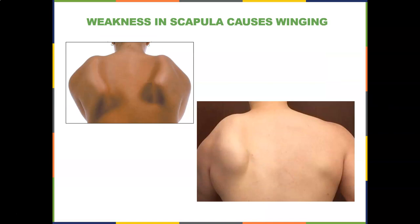Now here's an interesting point about weakness in the serratus anterior — it causes scapular winging. If you look at the top picture, she has bilateral serratus anterior weakness. On the bottom picture, he has unilateral weakness, and this was an injury from pitching — damage to the nerve. So if you see winging of the scapula, you can suspect weakness or some kind of damage to the nerve supply to the serratus anterior.